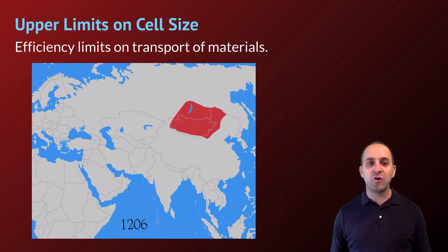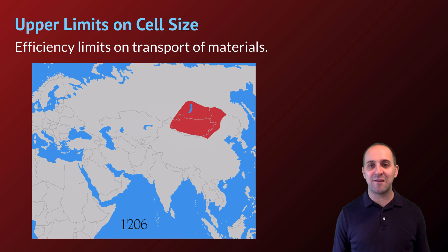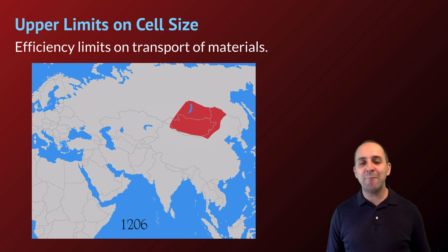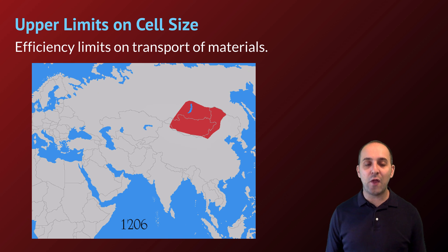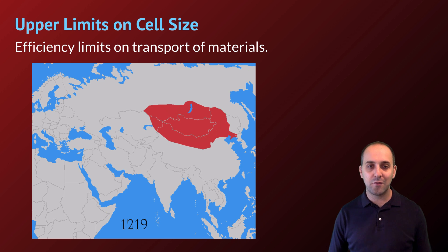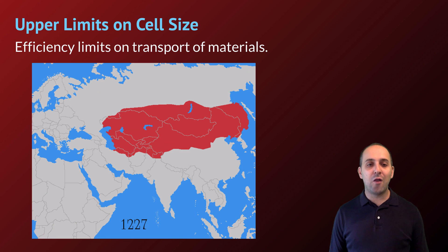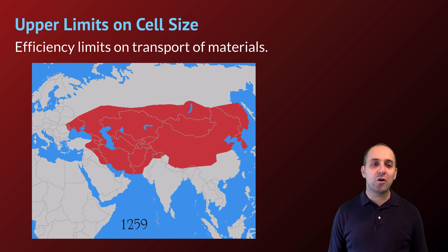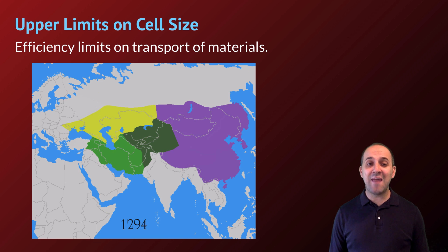The upper limits on cell size function a little bit differently. As the cell gets larger and larger, it becomes less and less efficient at transporting materials. I'm going to illustrate this with a non-cellular example — a quick little animation showing the expansion of the Mongol Empire from 1206 through the end of the empire. It gets larger and larger and larger, and then it breaks apart into four different smaller empires.